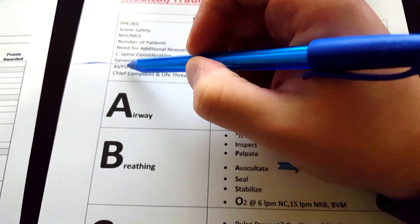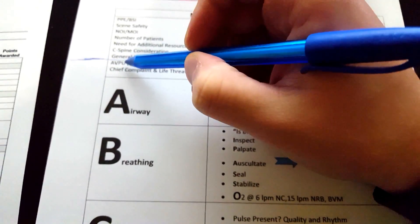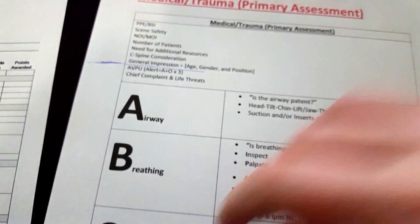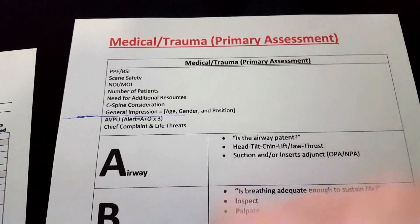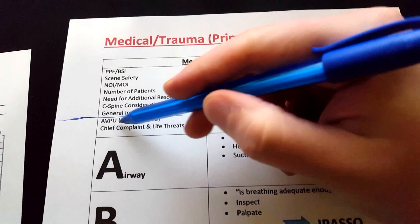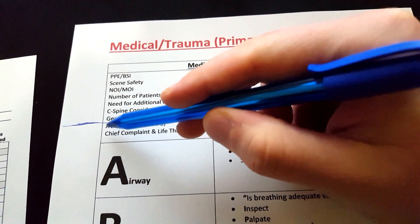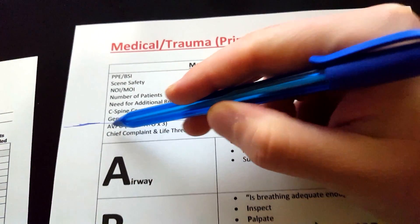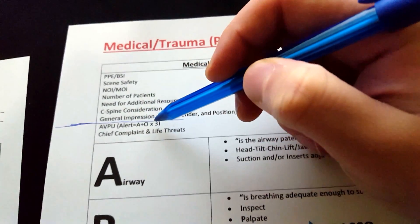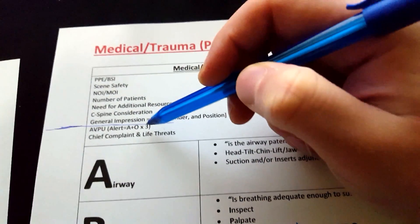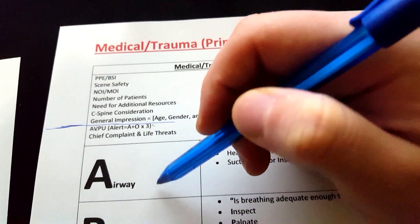If they don't respond verbally, go ahead and give them some painful stimuli to try to wake them up. If they respond to that, they get a P, or they might just be unresponsive. If your patient is either A or V on the AVPU scale, you can move on and do an alert and oriented times three.